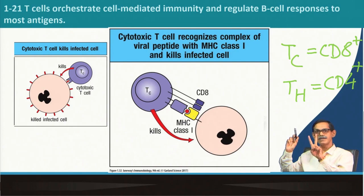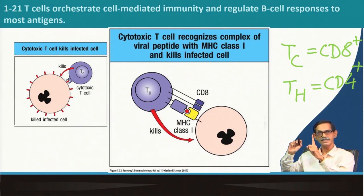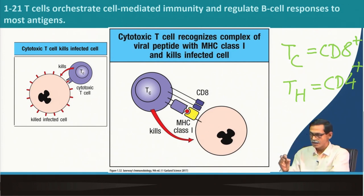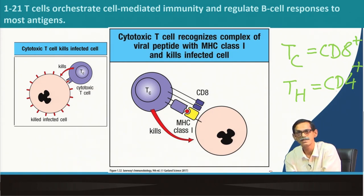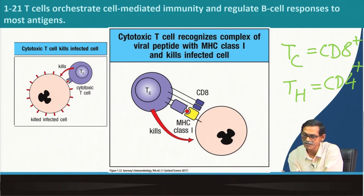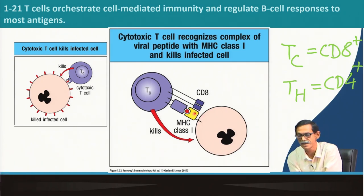Cytotoxic T cells express the co-receptor CD8 along with the T cell receptor and recognize MHC class 1. T helper cells express the co-receptor CD4 and recognize MHC class 2. So the virus-infected cell presents viral protein through MHC class 1, which is recognized by the TCR along with CD8, and the cytotoxic T cell kills the virus-infected cell by giving the signal for apoptosis.